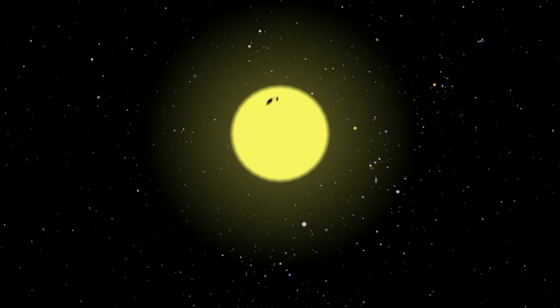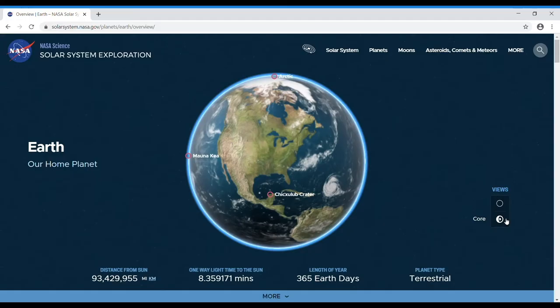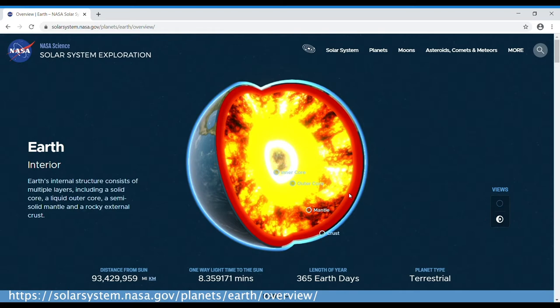Similar to the Earth, the Sun has different regions beneath its surface. While the Earth has different solid layers, the Sun does not, since it is made up of gas and therefore has no solid surface at all.